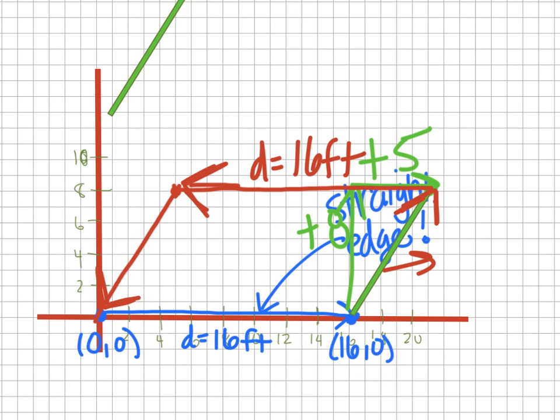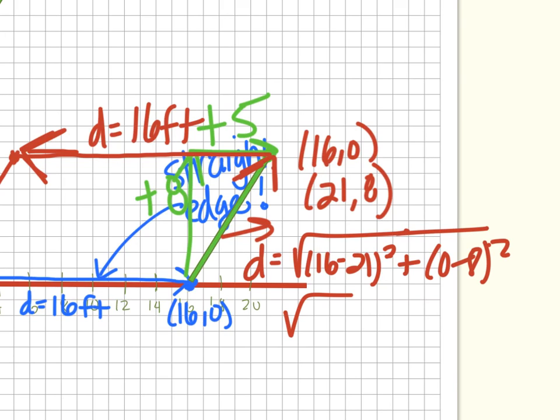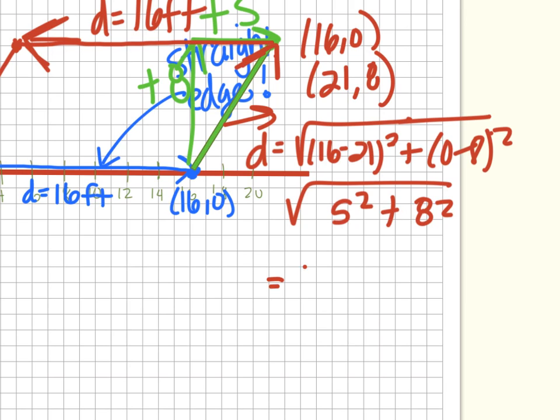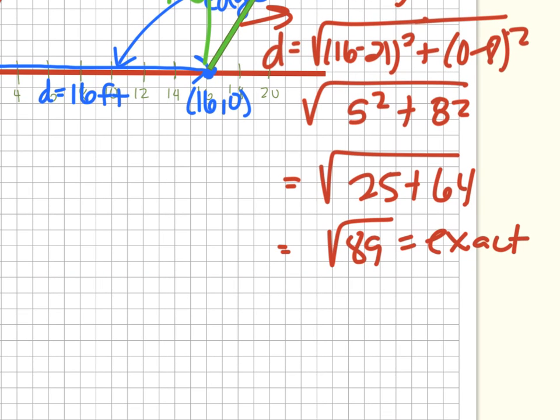These lengths here are going to need to be calculated, and so we'll just use our distance formula: (16-21) squared plus (0-8) squared. So we're going to subtract our x's and square them, so 16 take away 21 squared plus 0 minus 8 squared, and we end up with 5 squared plus 8 squared, which gives us 25 and 64, which is the square root of 89. I know 89 is a prime number, and so this is our exact value.